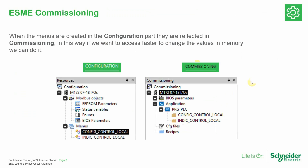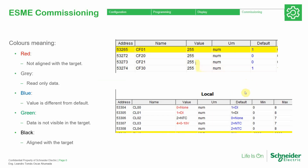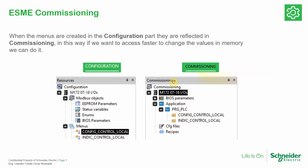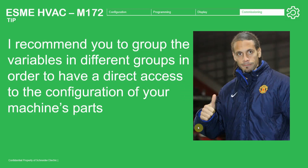So as I mentioned, if you want to read the EEPROM parameters or status variables quickly, we can use the filters in the commissioning tab, or we can create menus in the configuration. One recommendation is to group variables inside menus so we can easily get access to that information when we are in the commissioning tab.